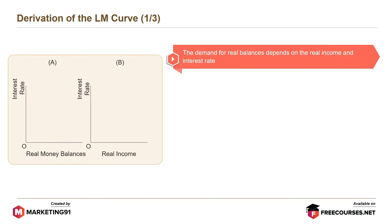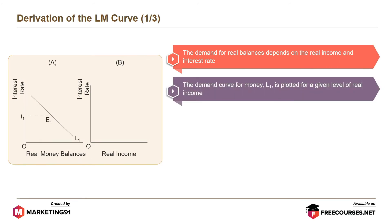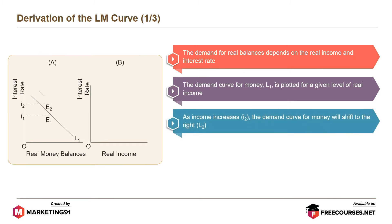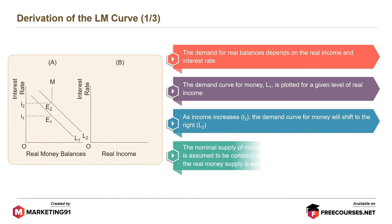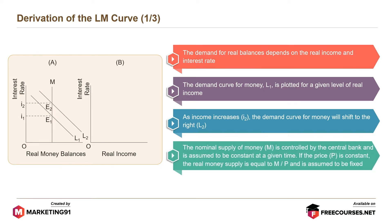The derivation of the LM curve is as follows. The demand for real balances depends on real income and interest rate. The demand curve for money L1 is plotted for a given level of real income. As income increases to Y2, the demand curve for money will shift to the right, i.e., L2. The nominal supply of money, M, is controlled by the central bank and is assumed to be constant at a given time. If the price P is constant, the real money supply is equal to M divided by P and is assumed to be fixed.